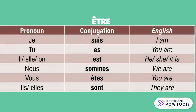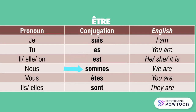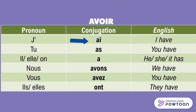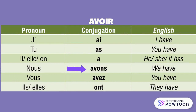'Être' at the present tense: je suis, tu es, il/elle/on est, nous sommes, vous êtes, ils/elles sont. 'Avoir' at the present tense: j'ai, tu as, il/elle/on a, nous avons, vous avez, ils/elles ont.